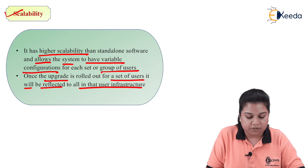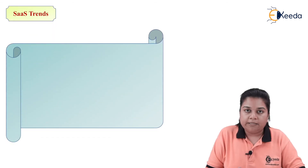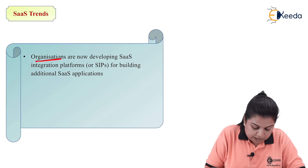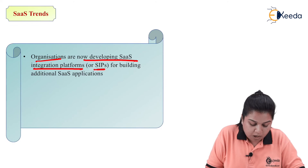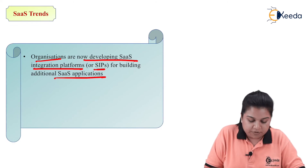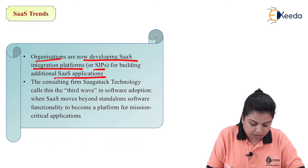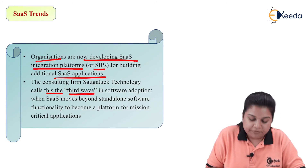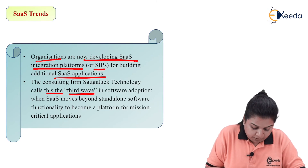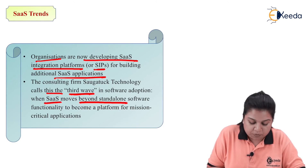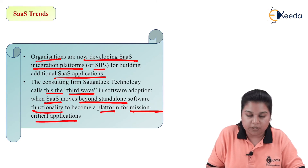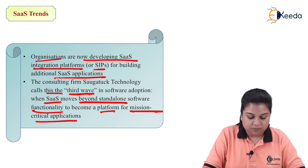Regarding SaaS trends, organizations are now developing Software as a Service Integration Platforms, or SIPs, for building additional SaaS applications. Consulting firms call this the third wave in software adoption — when Software as a Service moves beyond standalone software functionality to become a software platform for mission-critical applications. Thank you.